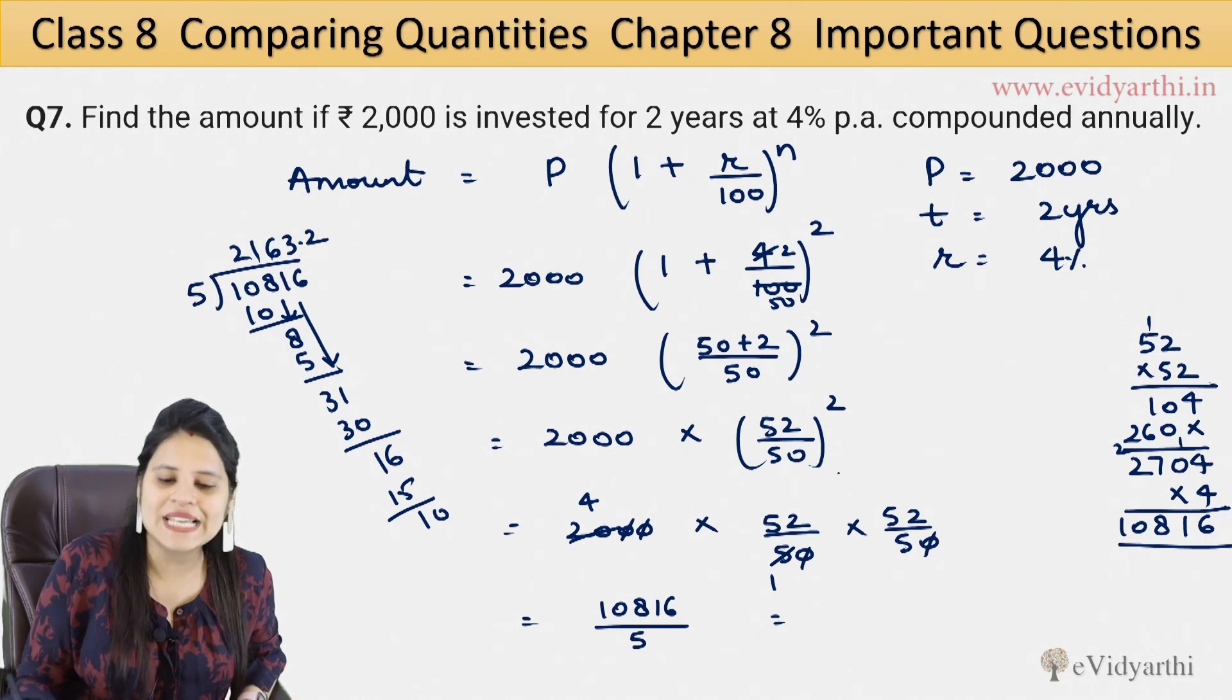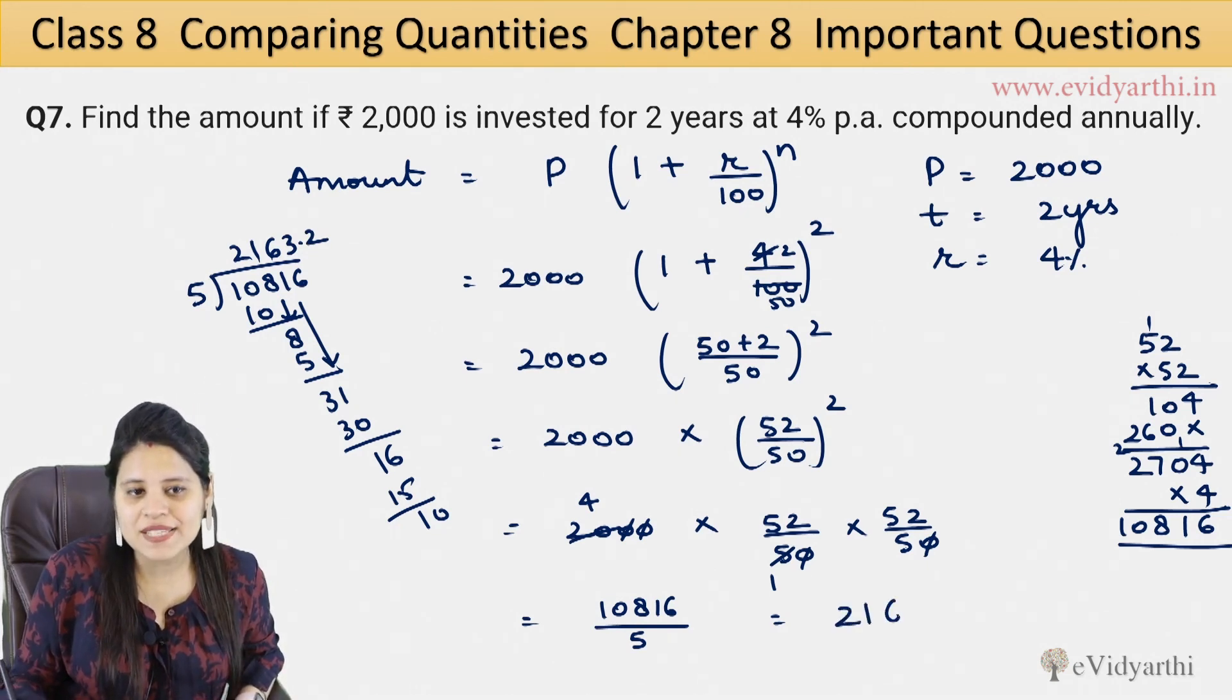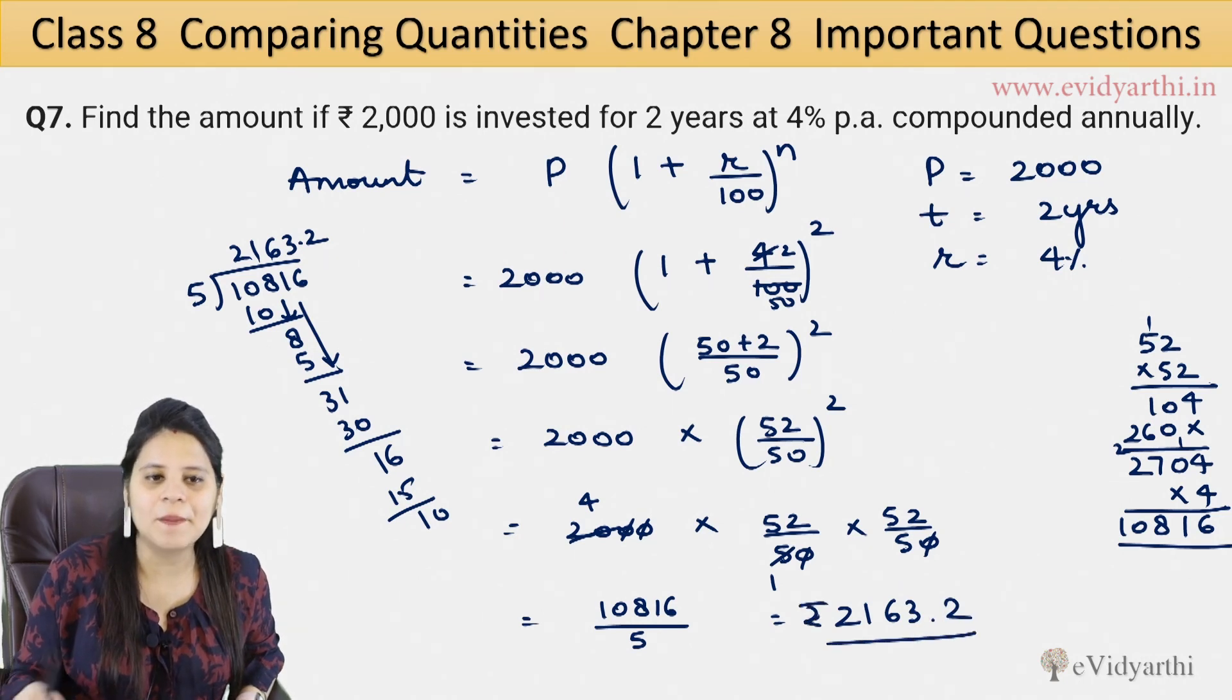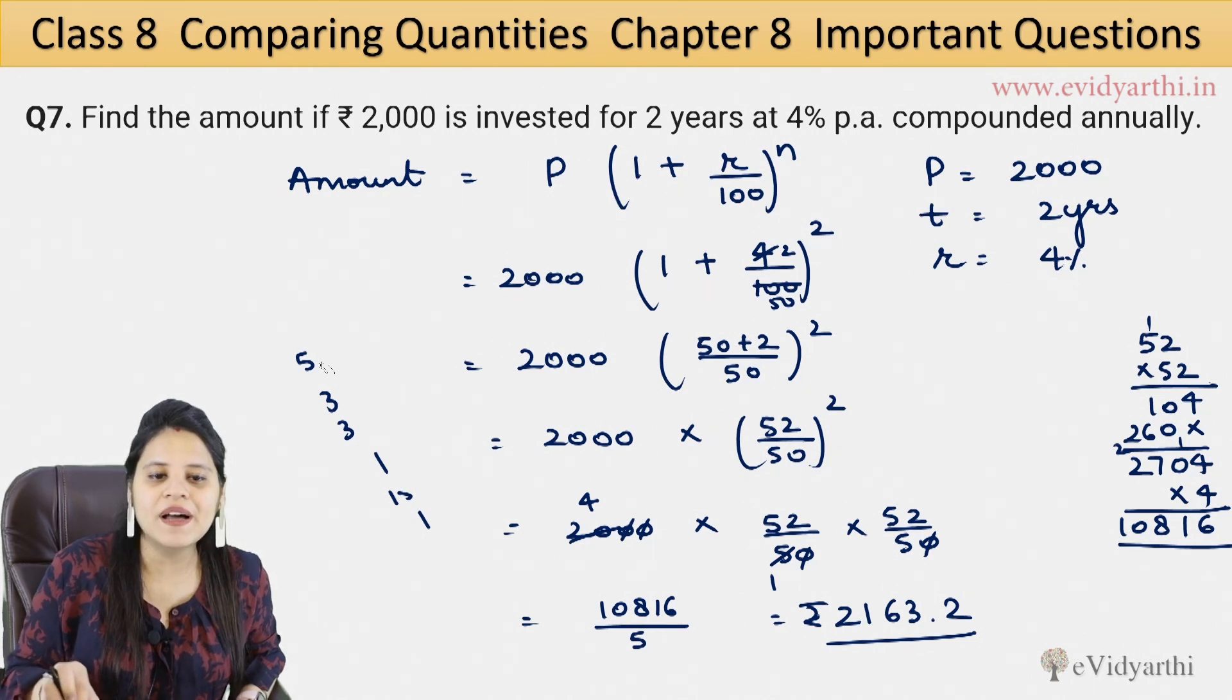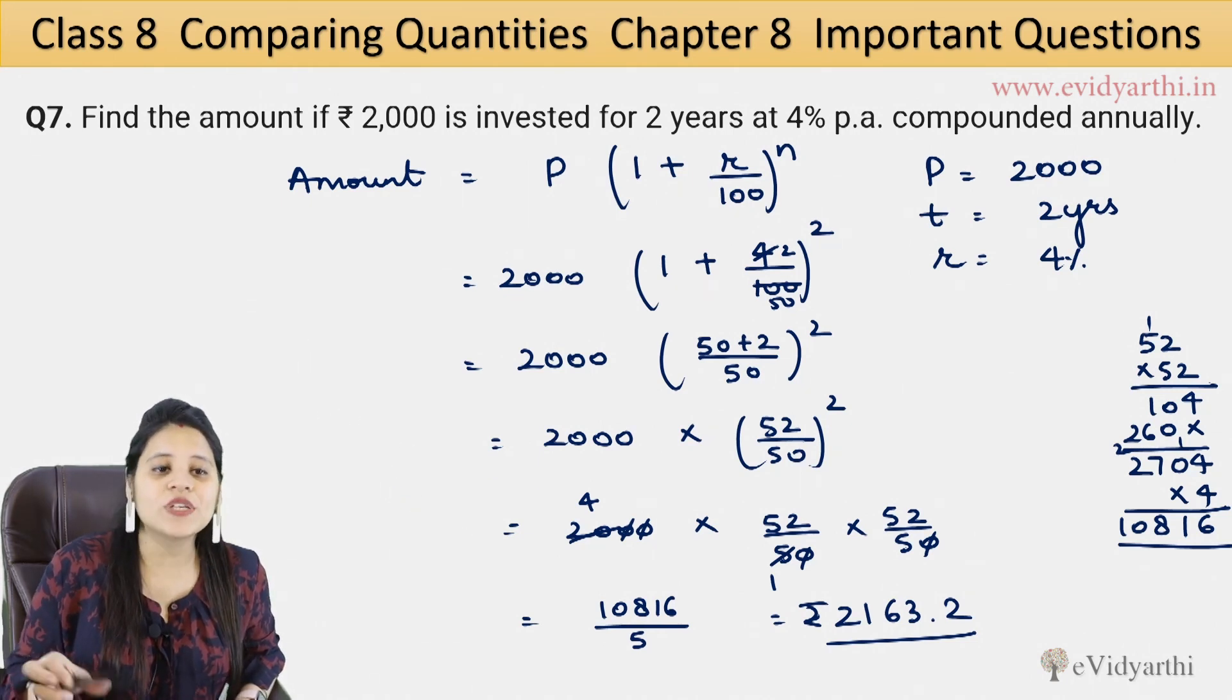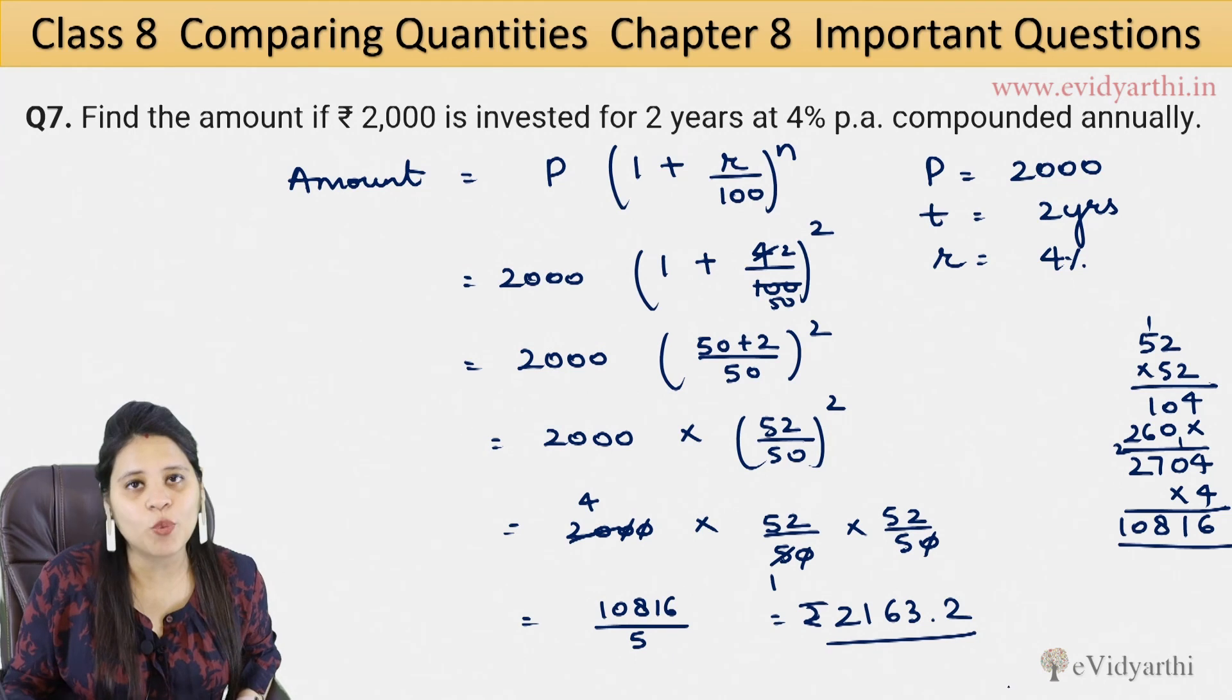Therefore, 2163.2. This much is the amount. So this is our amount. Okay, so this is our question number 7. I hope you will understand.